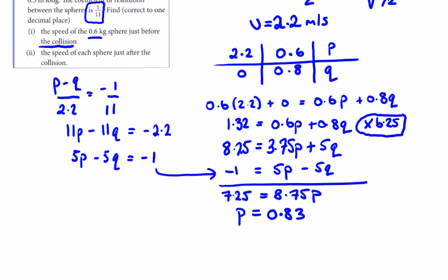5 times 0.83 minus 5q equals -1, so 5q equals 5 times 0.83 plus 1. Dividing the whole thing by 5 to get q.